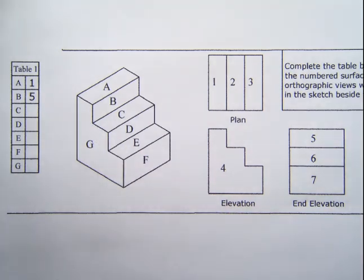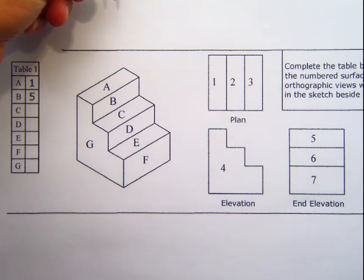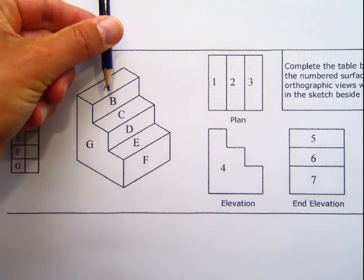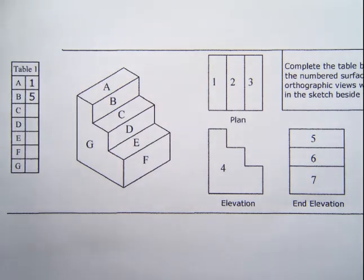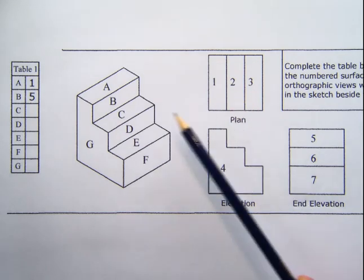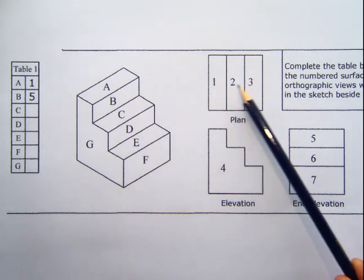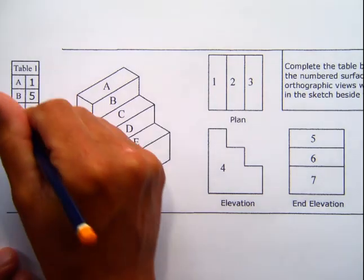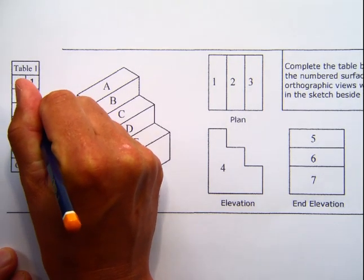So let's look at trying to do C now. So C, again, is one of these surfaces which is facing upwards, so to see it, you'd have to be looking down on top of it. So to be able to see that one, you have to be looking from above, which is the plan view. So C is the middle step, so it must be number two.